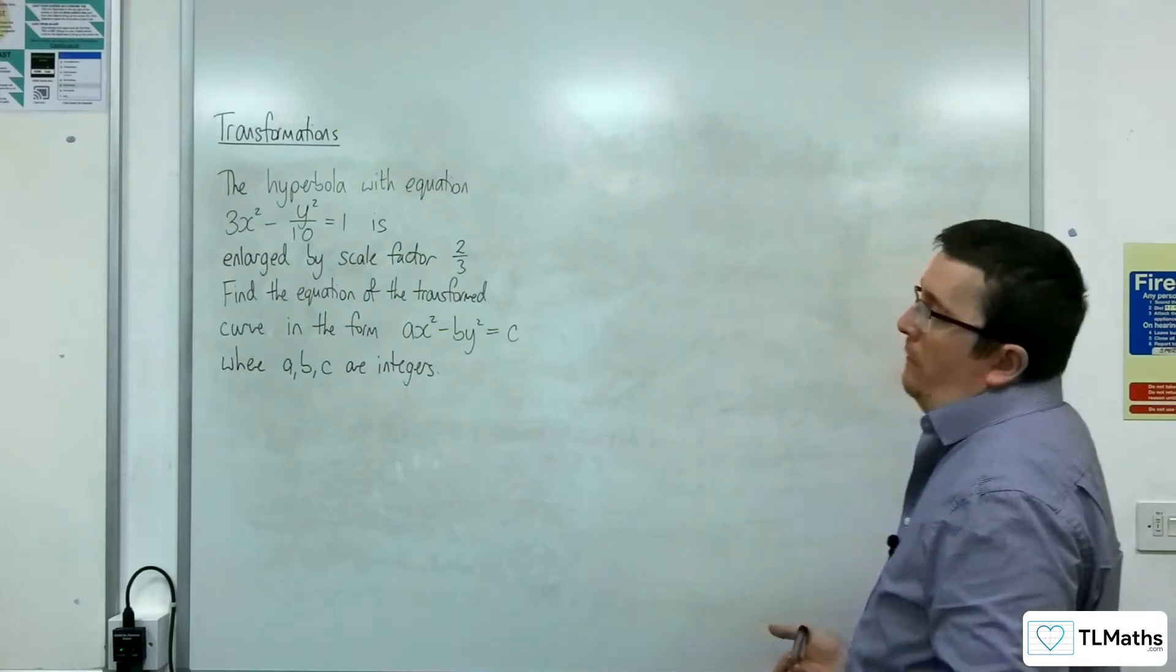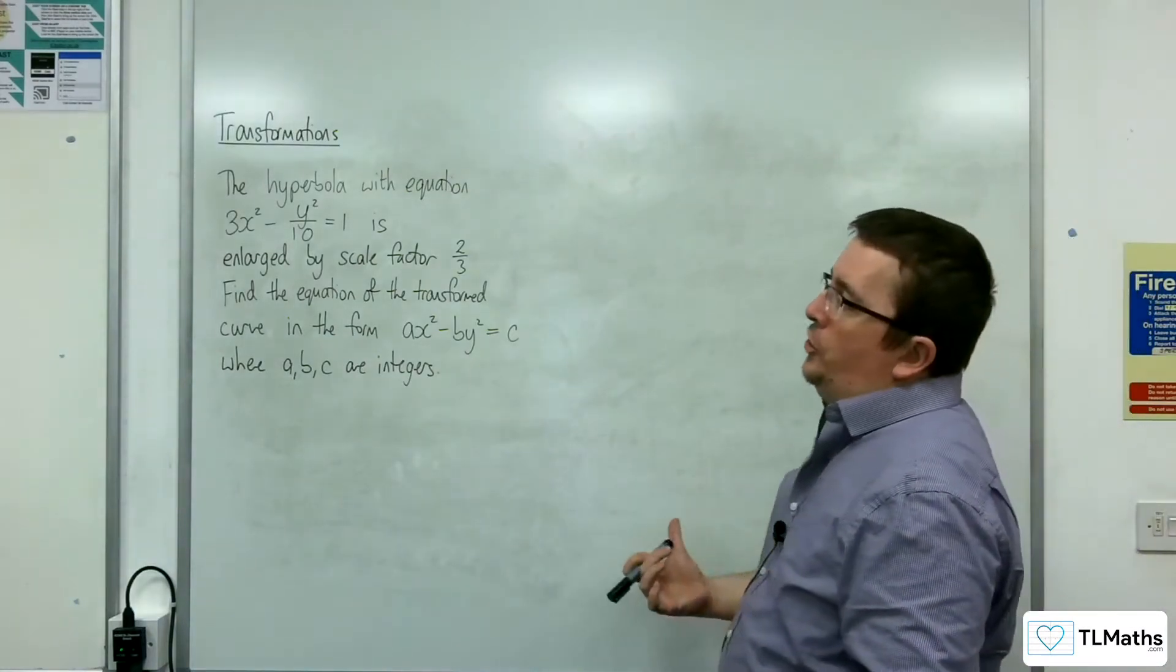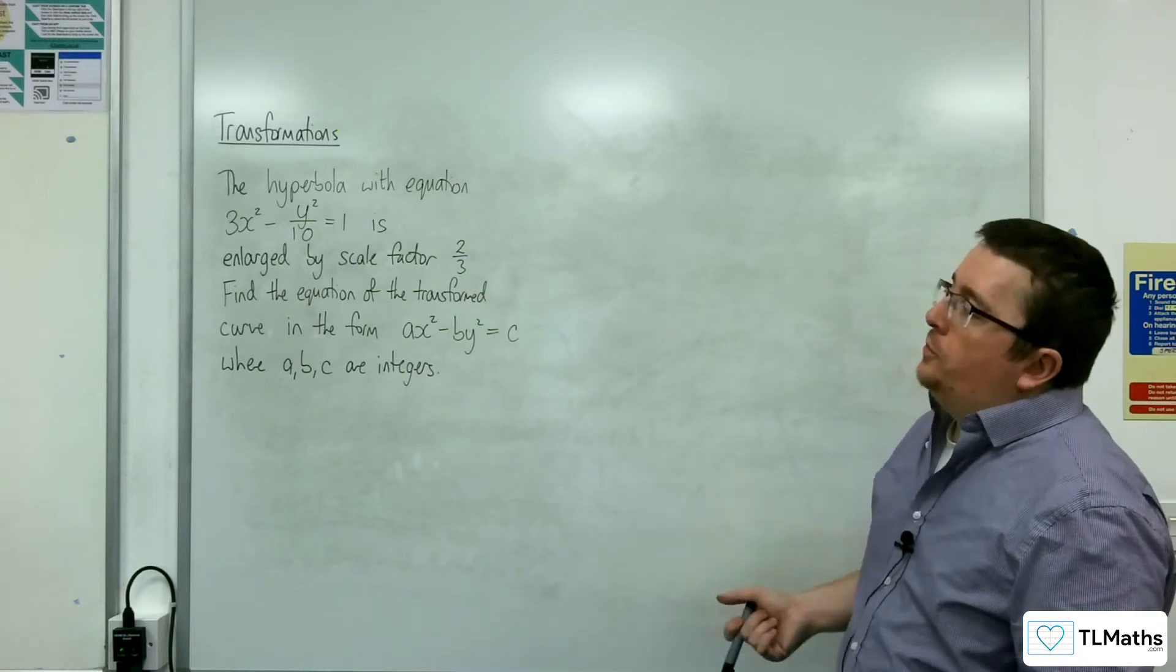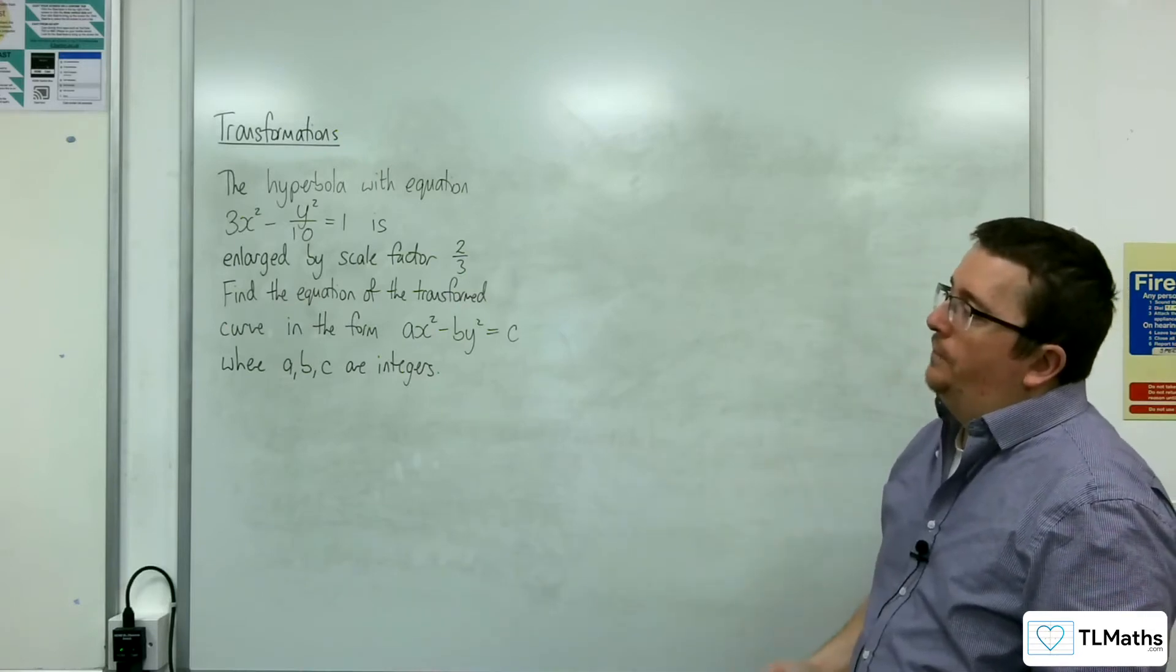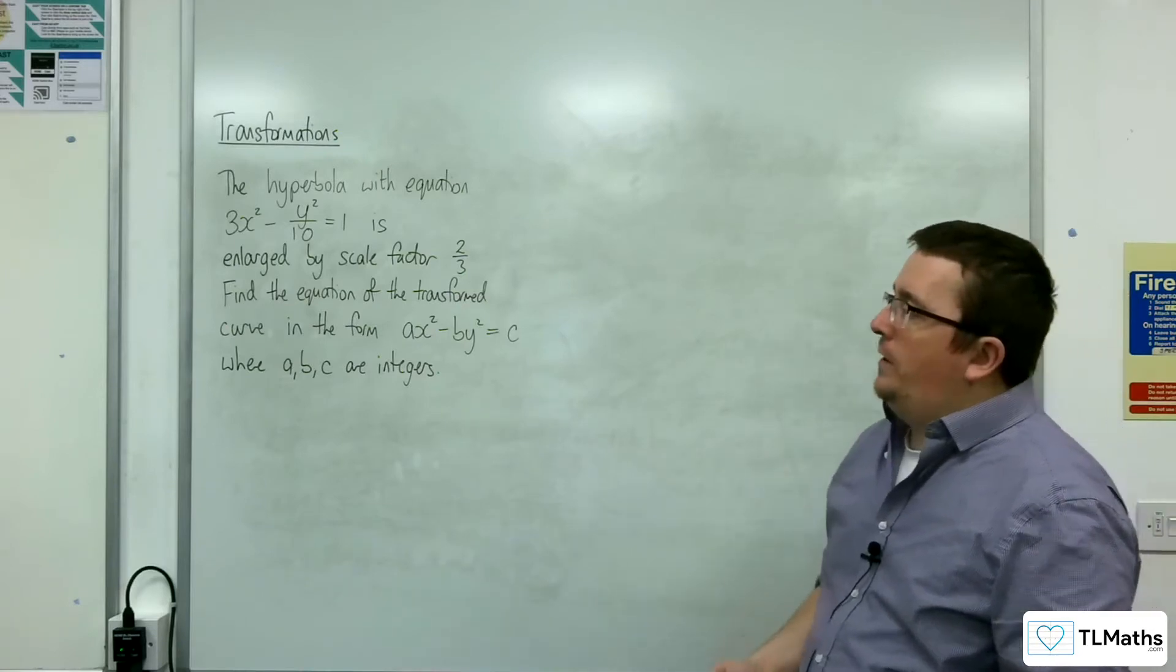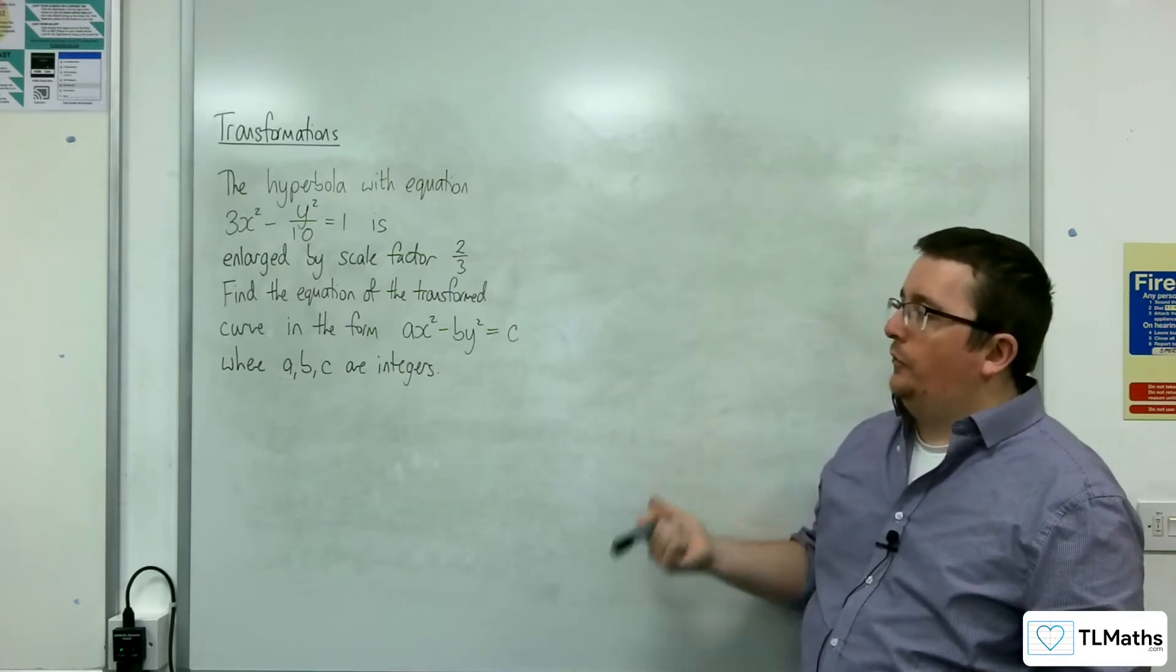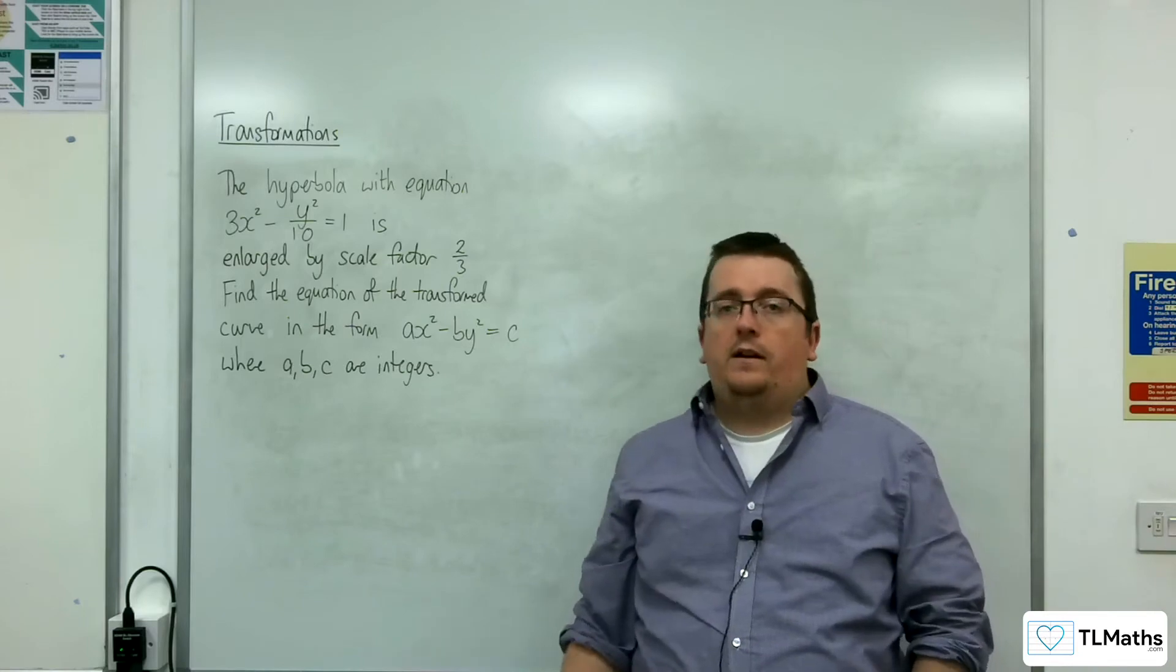In this video we've got the problem where we've got a hyperbola with equation 3x squared take away y squared over 10 equals 1 is enlarged by scale factor 2 thirds. Find the equation of the transformed curve in the form ax squared take away by y squared equals c where a, b and c are integers.